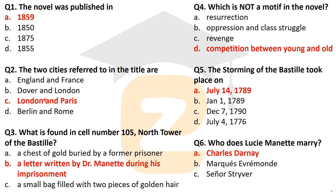The next question: what is found in cell number 105, North Tower of the Bastille? That was a letter written by Dr. Manette during his imprisonment. Dr. Manette was the father of Lucy Manette, who was the heroine of this novel, and he had written a letter for his daughter Lucy Manette.